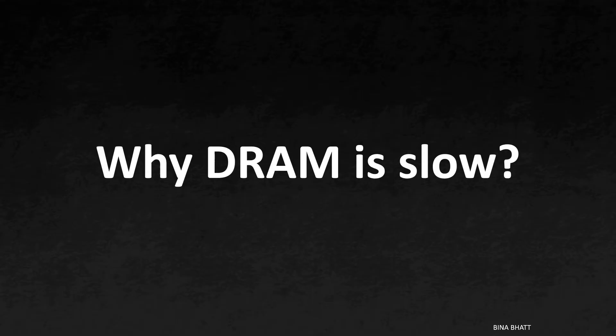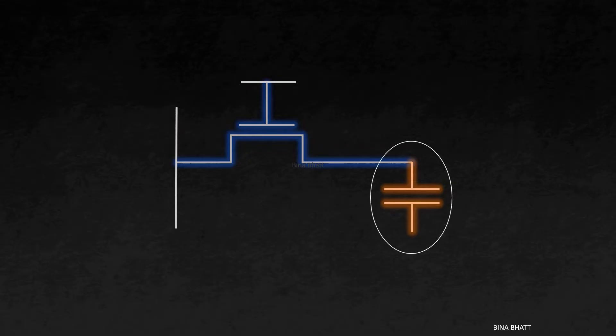Let's start off with the cell structure. A DRAM cell consists of an access transistor and a capacitor. The capacitor holds the data, while the access transistor allows access to it.